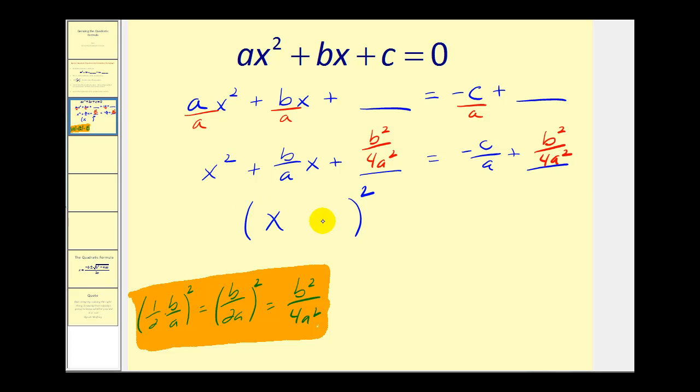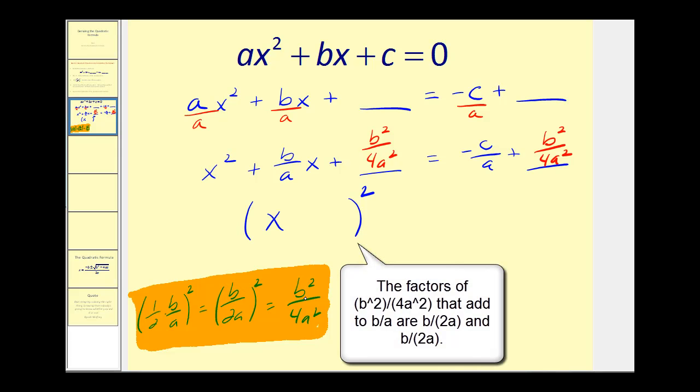This first term will be X. The second term will be whatever we squared to get this B squared over 4A squared. If you take a look at the work, we squared B over 2A to obtain B squared over 4A squared.